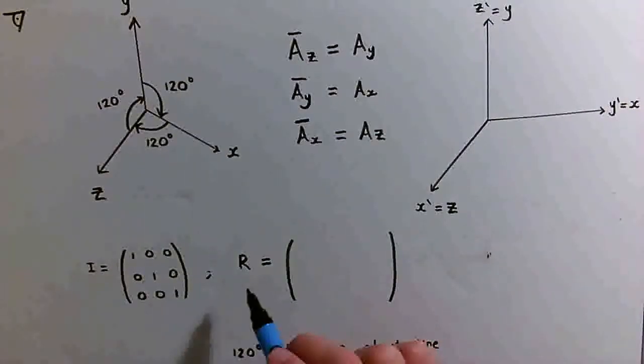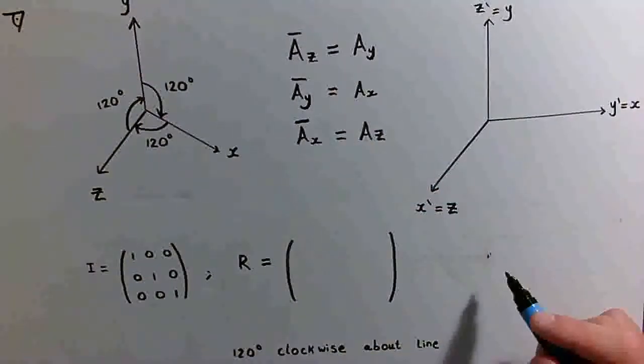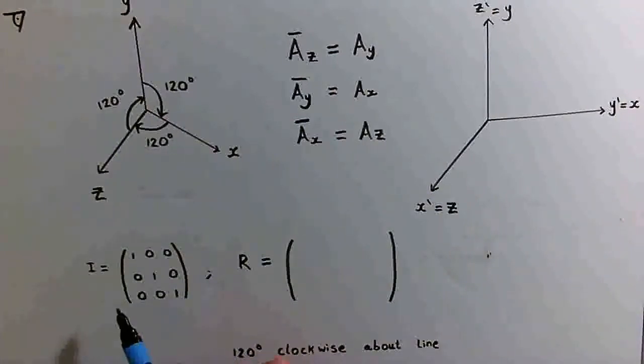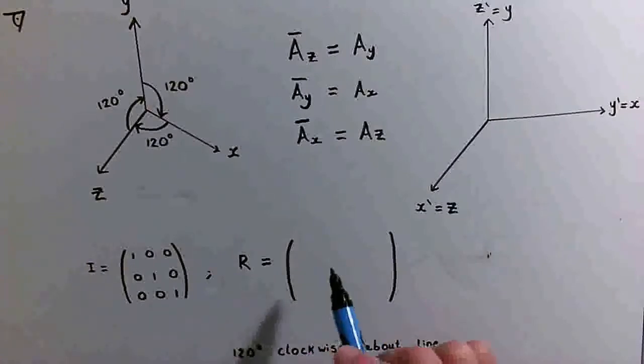We can start to write down our rotation matrix R using the relationships we've got here. A helpful way to do this is to think of the three-dimensional identity matrix which I've written here and use this to try and fill in our rows of R. Let me tell you what I mean.